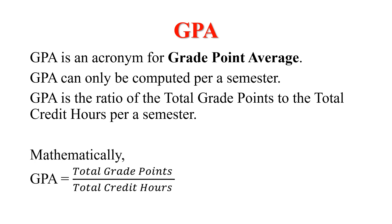Mathematically, GPA is equal to total grade point divided by total credit hours. The 'total' means we are going to sum all the grade points, and the total credit hours means we are going to sum all the credit hours, and then find their ratio. That is how we calculate a GPA for a particular semester. Now let's have a practical look at how to do it.